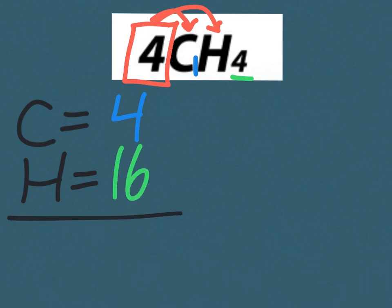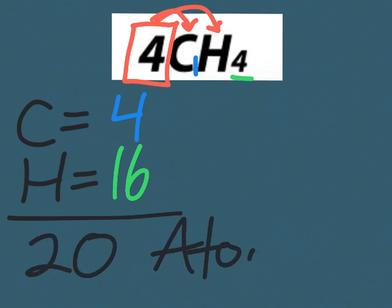Our last step is to add them together. 4 carbon atoms plus 16 hydrogen atoms gives us a total of 20 atoms in the formula for 4CH₄.